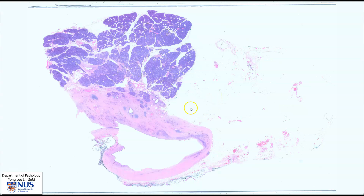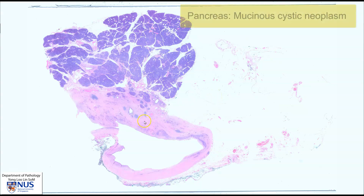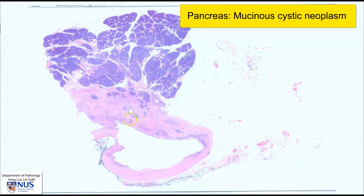Hello, this is a virtual microscopy slide of a mucinous cystic neoplasm of the pancreas. At low magnification, here is the benign pancreatic parenchyma, and this is the cystic tumor, and here is some peripancreatic fat.